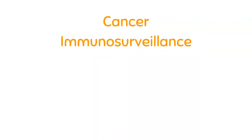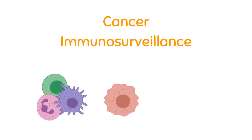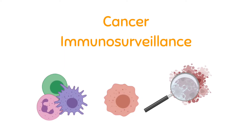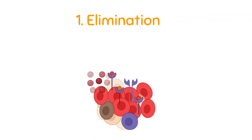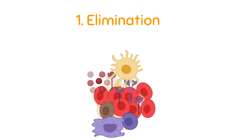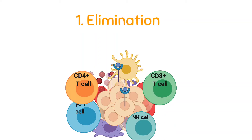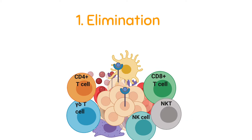Cancer immunosurveillance is a term used to describe the processes by which cells of the immune system look for and recognize precancerous and cancerous cells in the body. The first step of immunosurveillance is elimination: when tumors arise in a tissue, immune cells including macrophages, dendritic cells, gamma-delta T cells, NK cells, CD4 and CD8 T cells, and NKT cells recognize and destroy potential tumor cells.